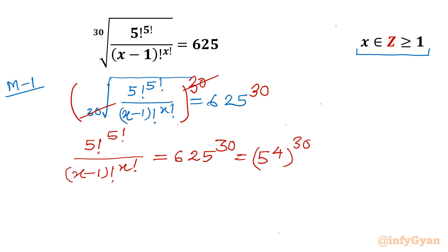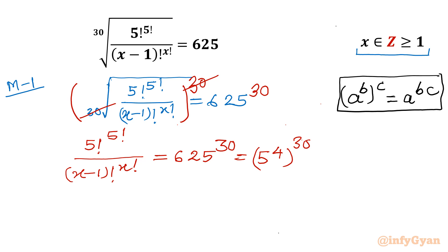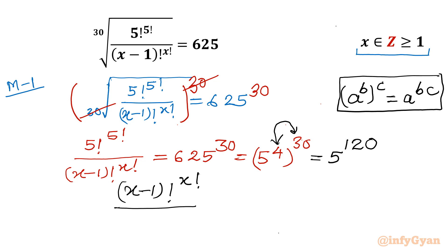Now I will write one exponent law: a power b, whole raised to power c, equals a power b times c. Using this, I take the product of the powers 4 and 30 to get 5 power 120. Now I flip both sides, taking the reciprocal: x minus 1 factorial raised to the power x factorial, divided by 5 factorial raised to the power 5 factorial, equals 1 over 5 raised to the power 120.